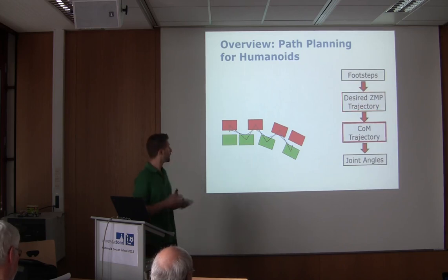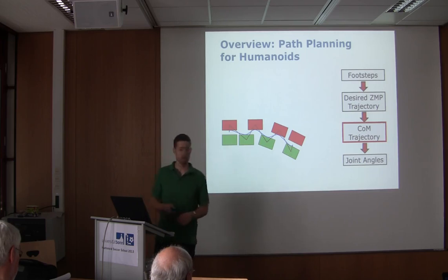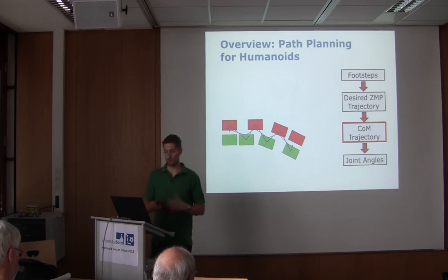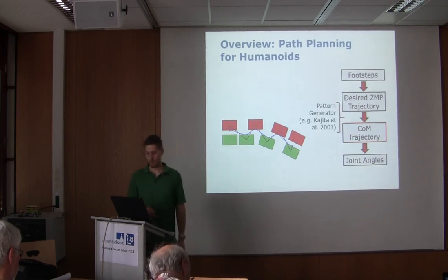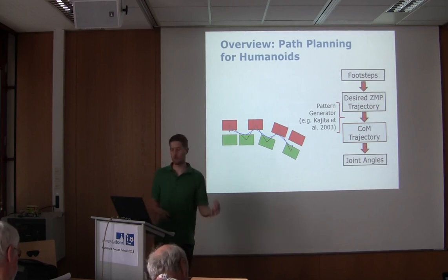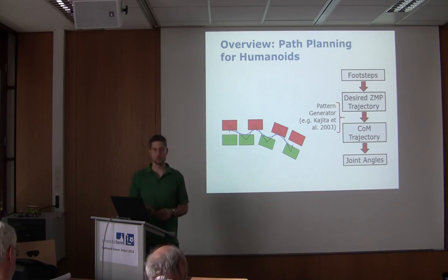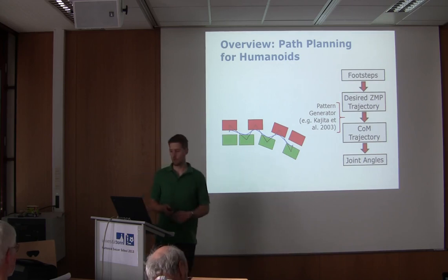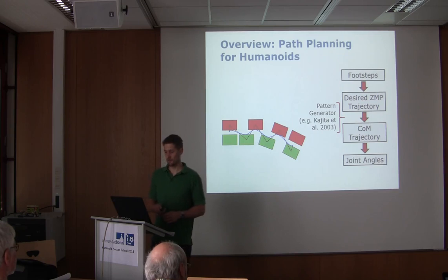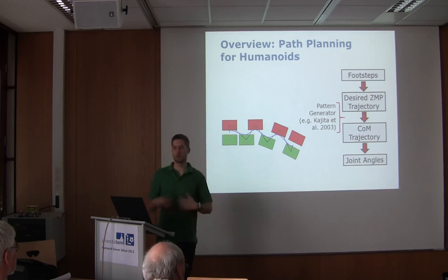Let's assume we have some black box that generates the center of mass trajectory — shown in blue. From this you can generate the motion with inverse kinematics, which gives us the joint angles. This method was introduced by Vukobratović in 2003; it's a cart-table model. So for now, let's assume once we have the footsteps, we can execute them.